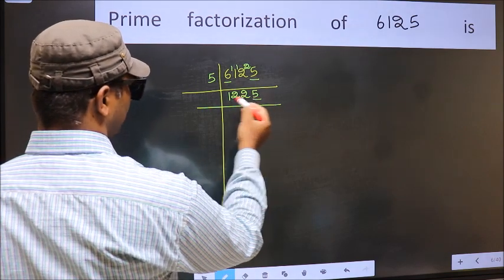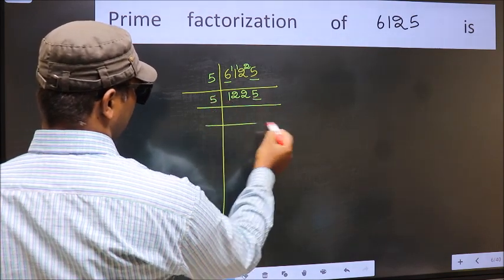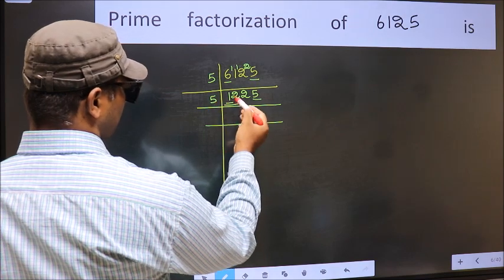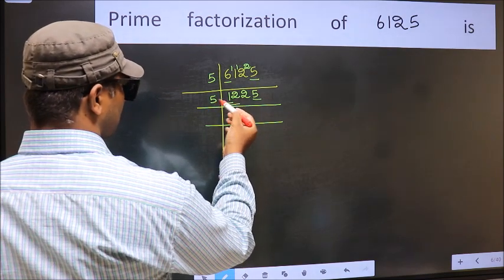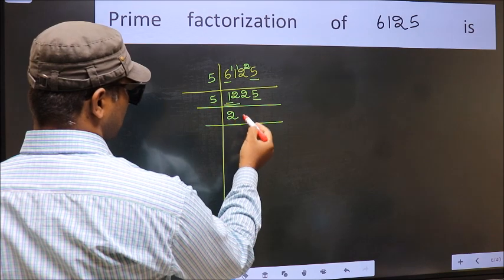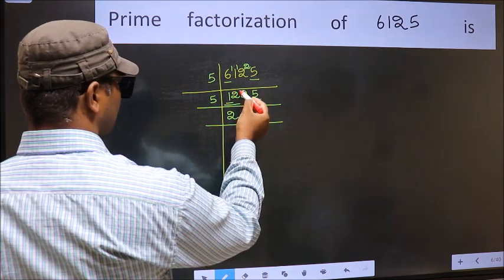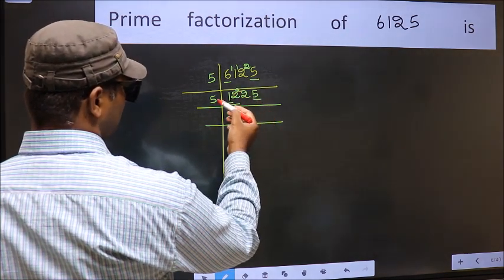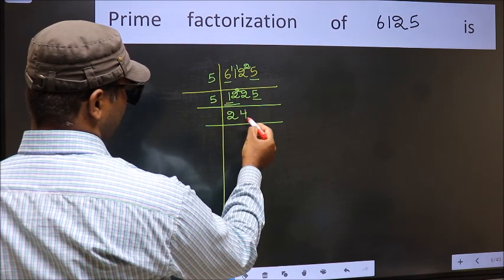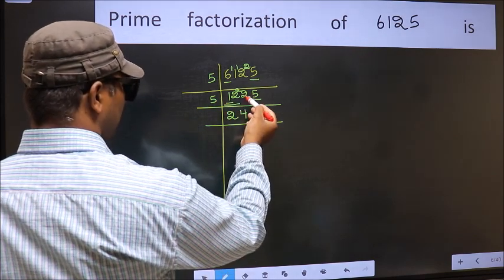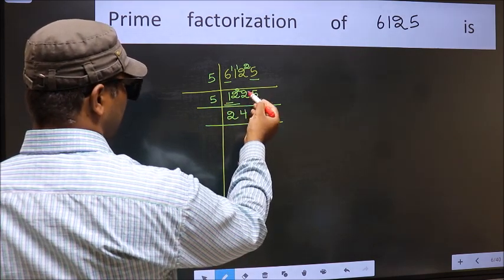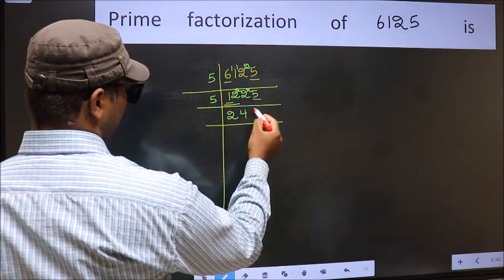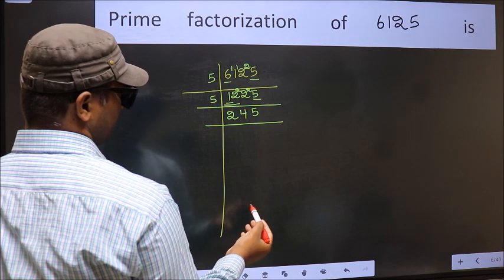Now the last digit is 5, so take 5 again. First number 1 is smaller than 5, so take 2 numbers: 12. A number close to 12 in the 5 table is 5 twos is 10. 12 minus 10 is 2, carry forward to get 22. A number close to 22 in the 5 table is 5 fours is 20. 22 minus 20 is 2, carry forward to get 25. When do we get 25 in the 5 table? 5 fives is 25.